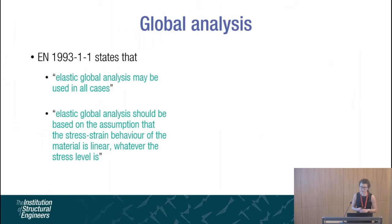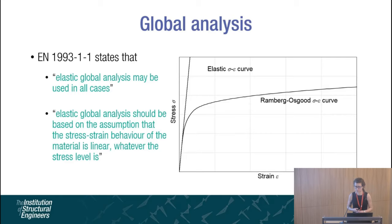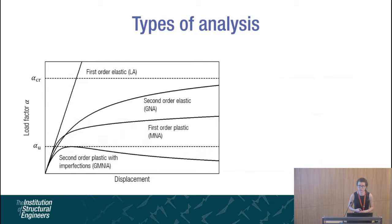I will now discuss the current design standards. As previously mentioned, the stainless steel design codes have been developed following and in conjunction with the carbon steel design codes. EC3 Part 1 for carbon steel states that an elastic global analysis may be used in all cases and should be based on the assumption that the stress-strain behaviour of the material is linear whatever the stress level is. The supplementary rules for stainless steel in Part 4 give no further guidance on global analysis. However, as we can see, stainless steel exhibits a highly non-linear response and therefore it is important to assess whether these rules still apply for stainless steel applications.